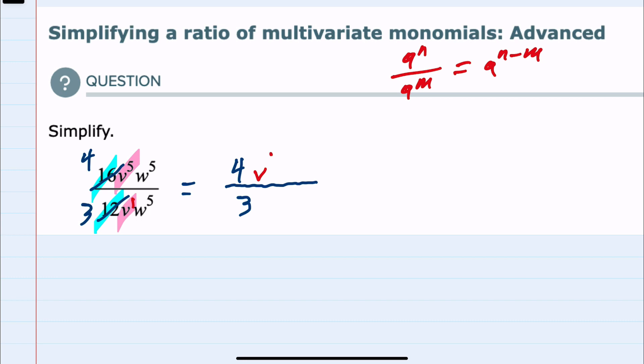5 minus 1 is 4, so we've simplified the v's to v^4, and then we look at the w's. We apply the same rule: keep the variable w, with the power of the top, 5, minus the power of the bottom, 5. So our new power here is 0, and we recall that raising a variable to the 0 power is just 1. So w^0 is just 1.